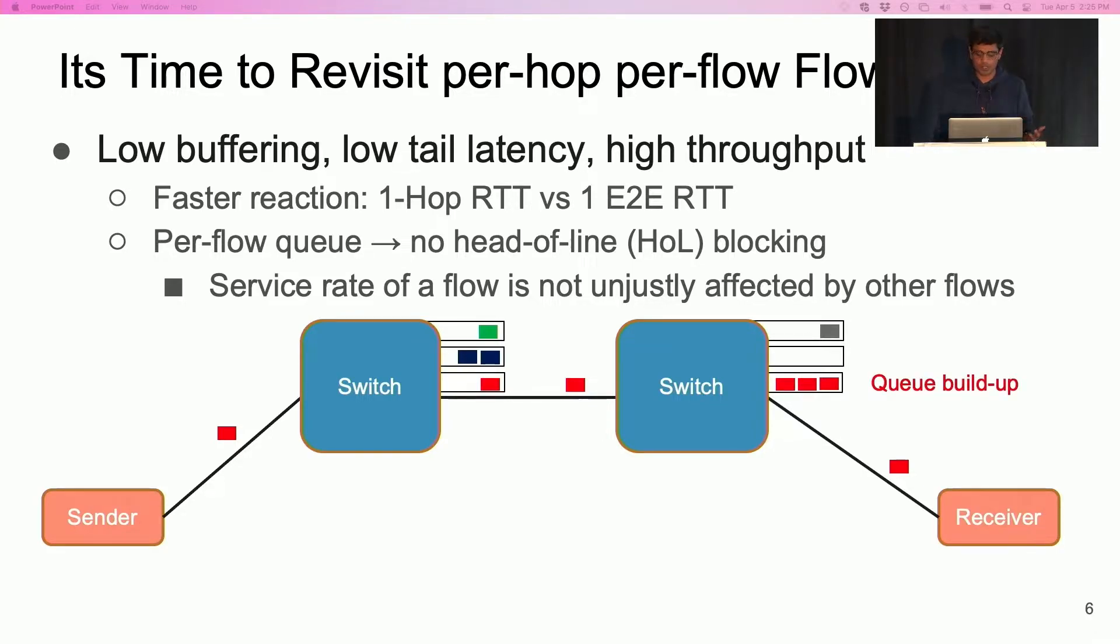The switch generates backpressure feedback for the flow and sends it to the upstream switch. On receiving this backpressure feedback, the upstream switch throttles the flow.